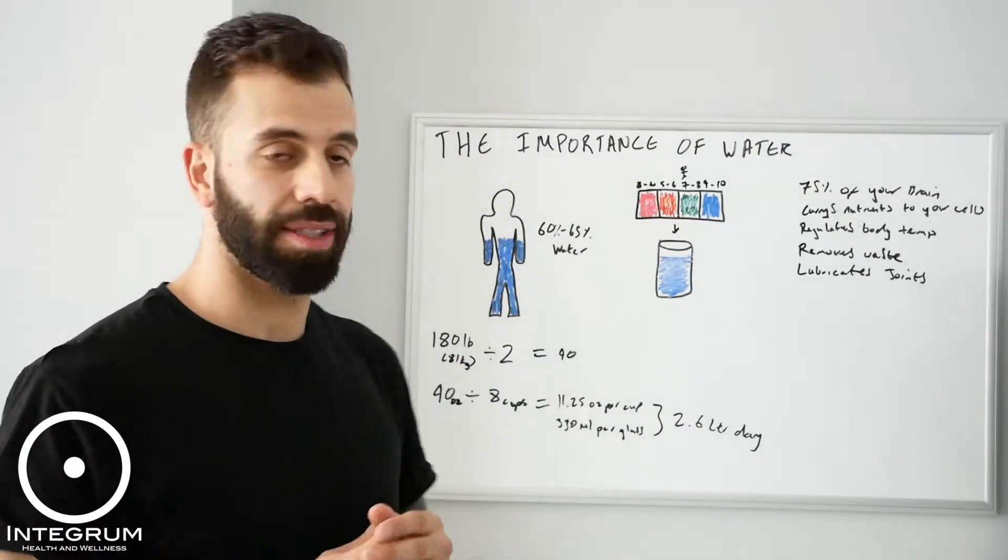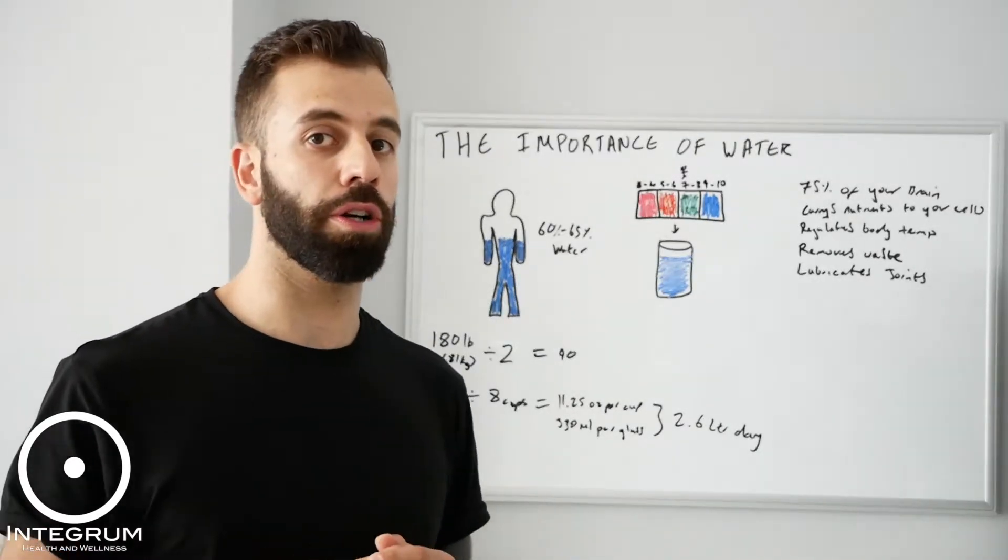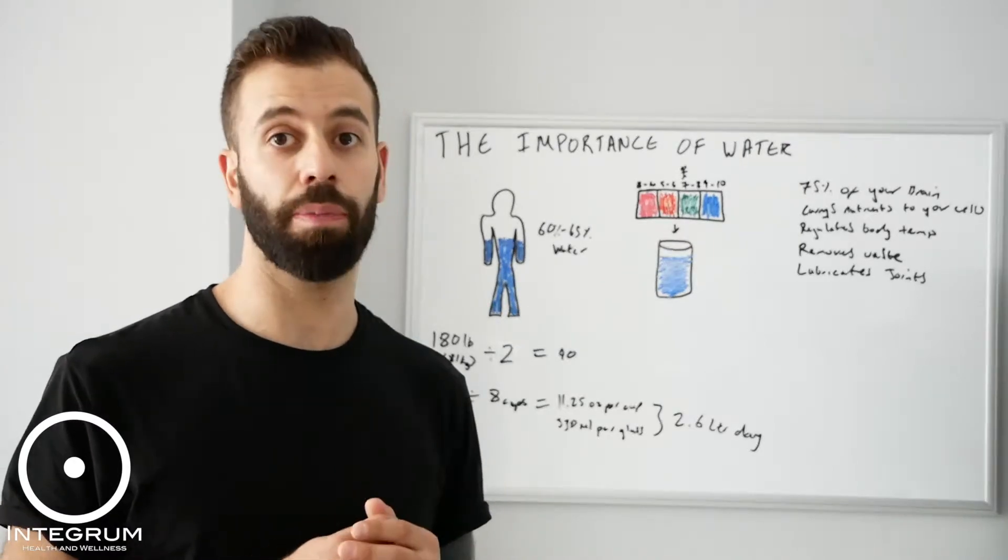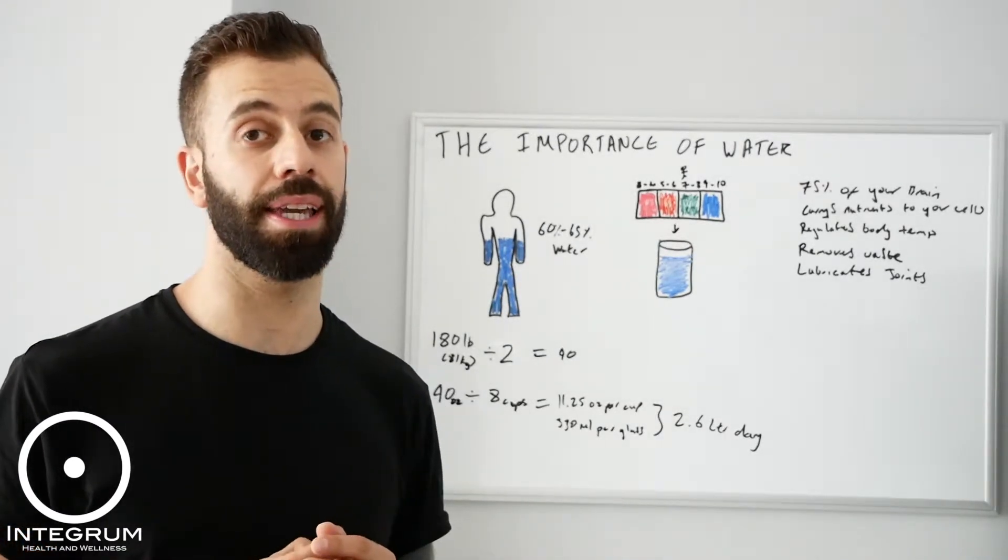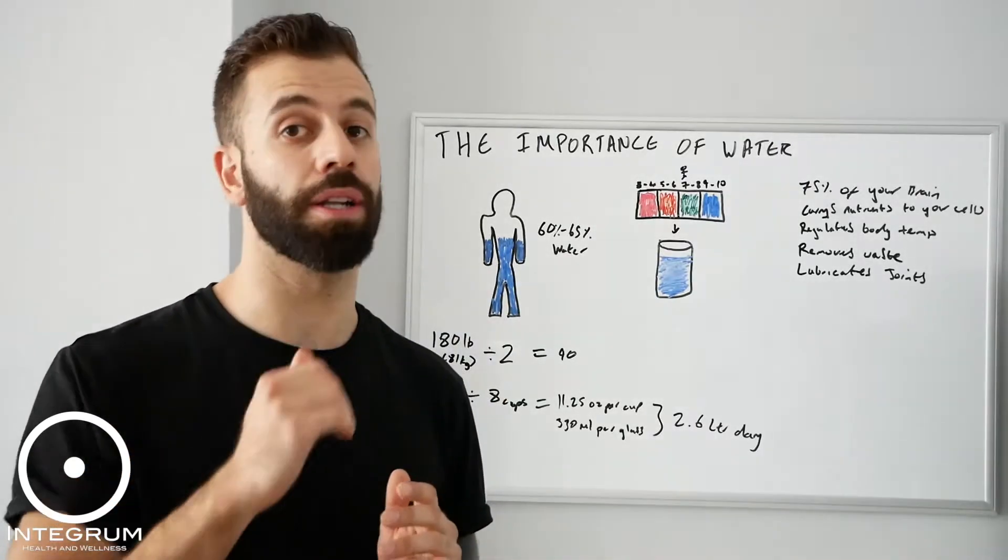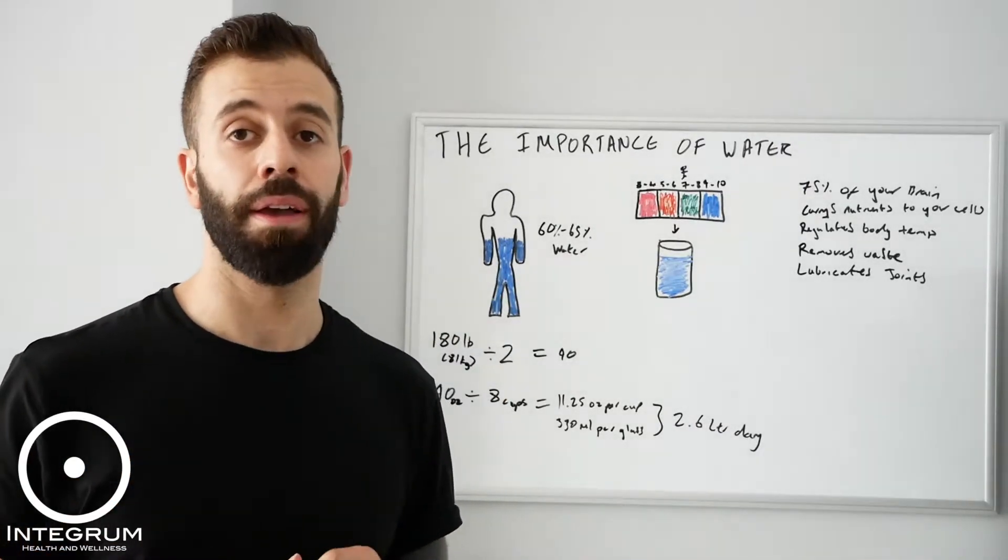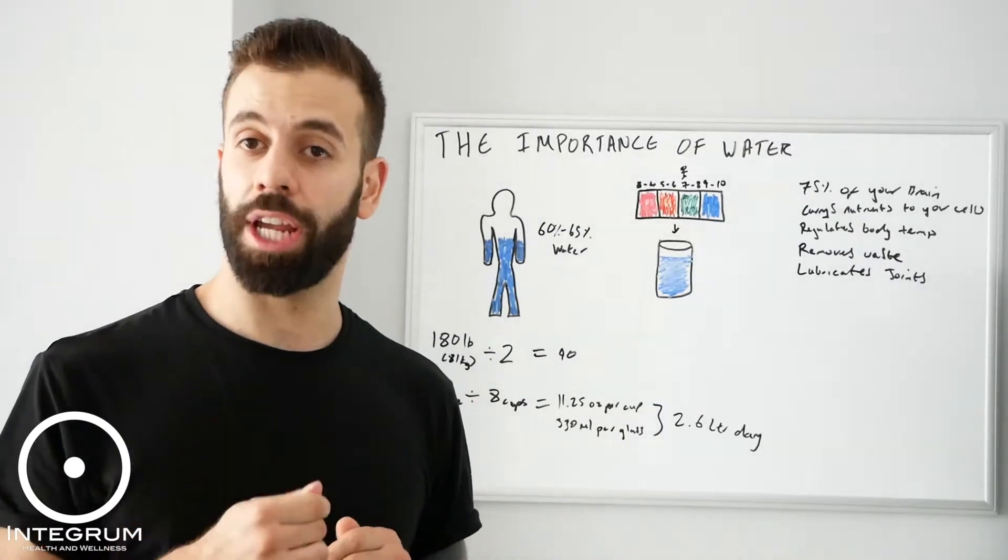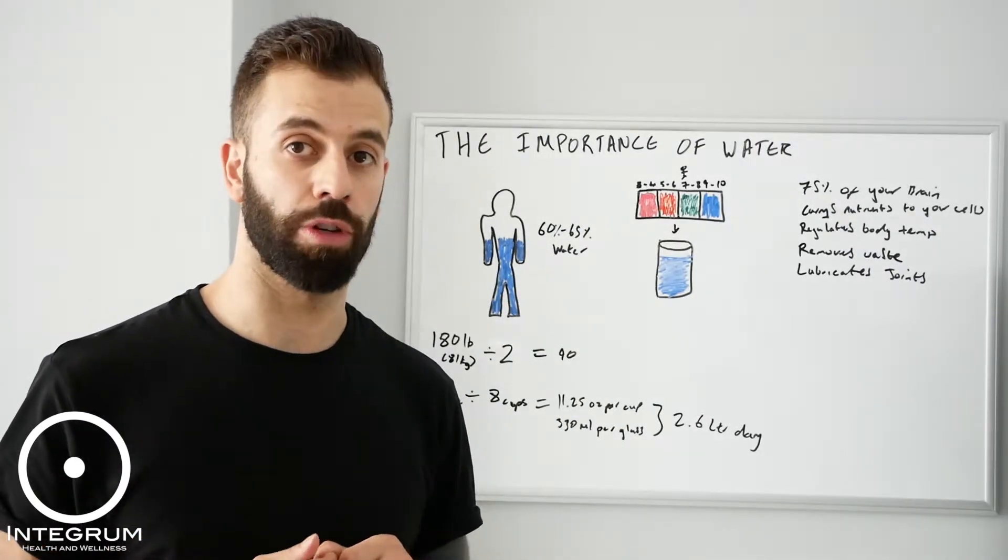So next time you're out buying your bottled water or you want to go and test your tap water, you can buy really cheap pH testing kits on Amazon. I'm not affiliated with any, but I'll find a link for one and stick it below for you to look at. That will be a way for you to check the pH of the water that you're drinking.